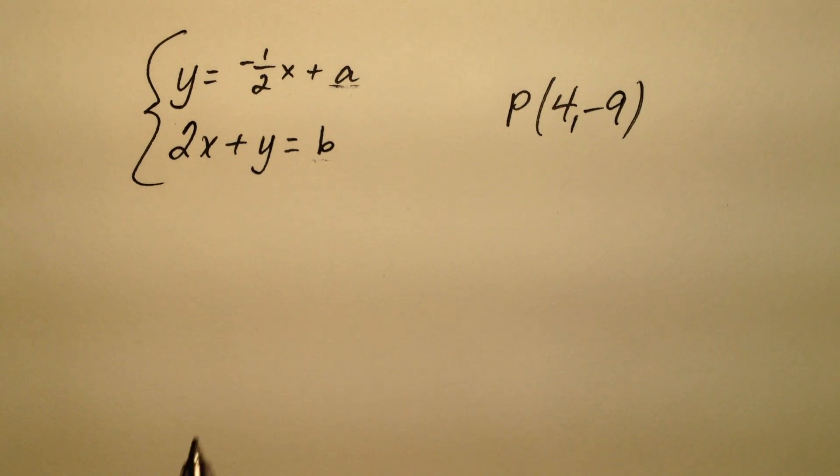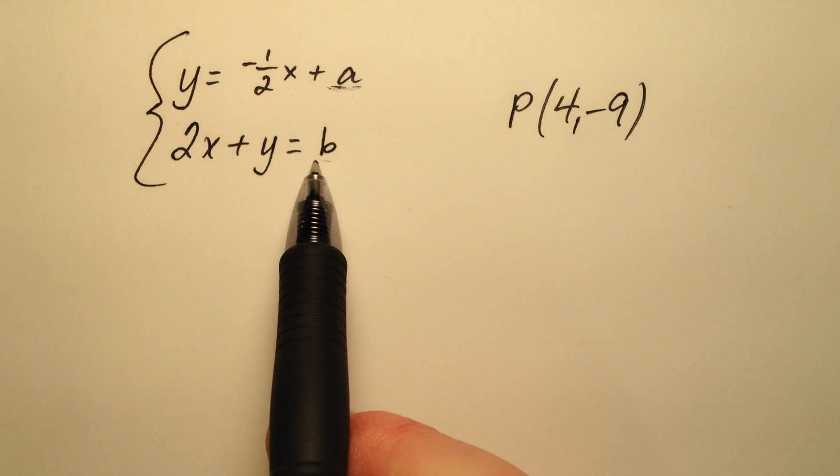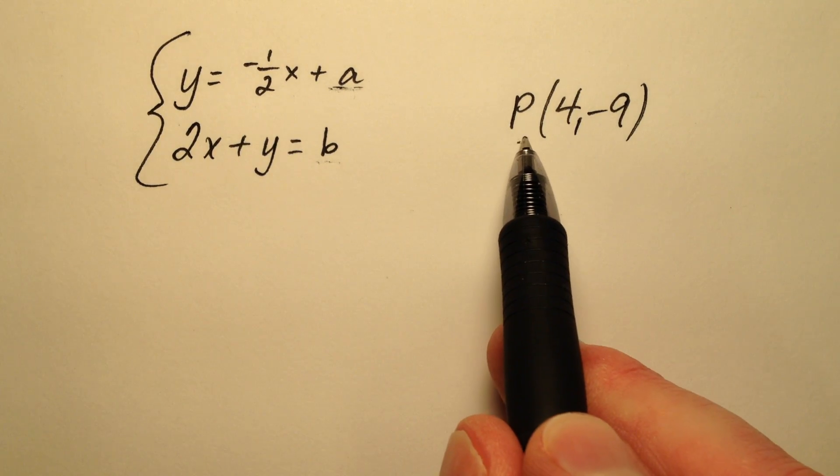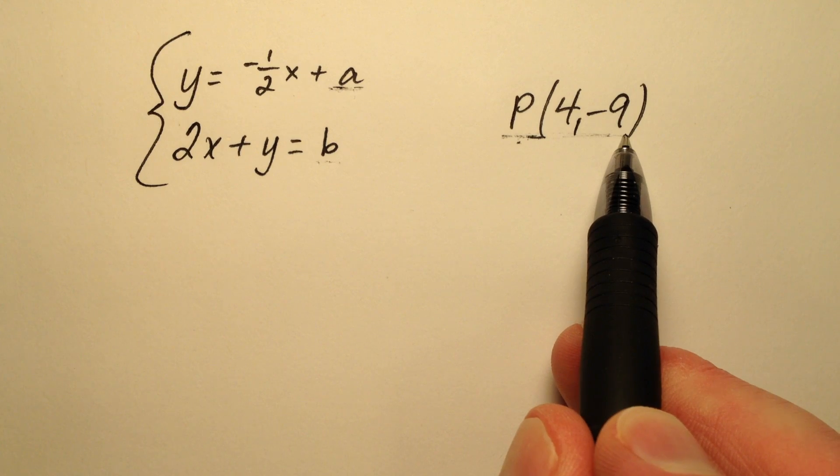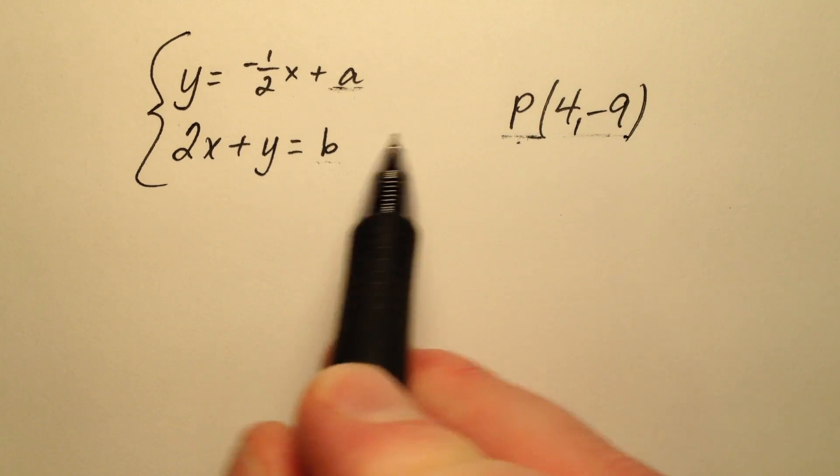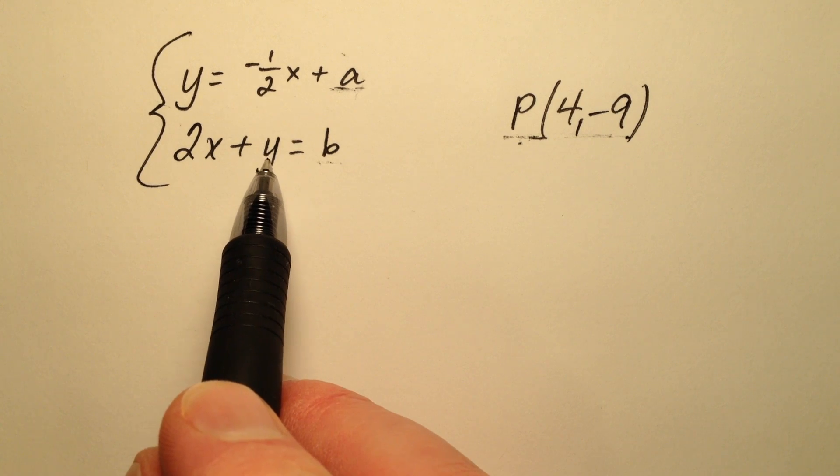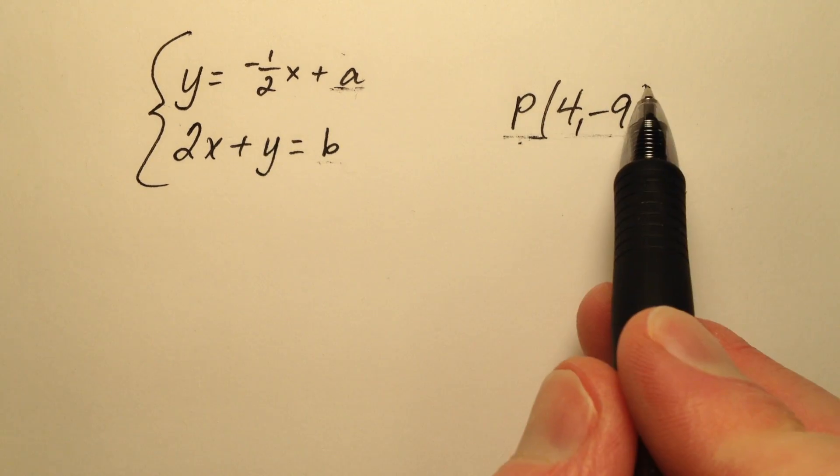In this example, we're going to determine values for a and b such that the linear system will have a solution at the point (4, -9). When looking at this, we know that these two lines are going to intersect and they're going to do so at this point.